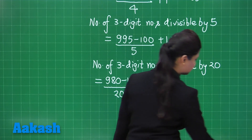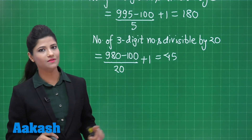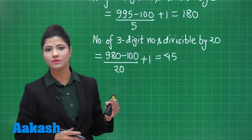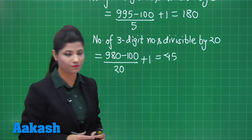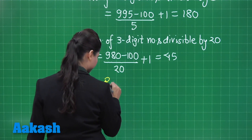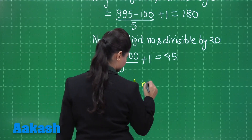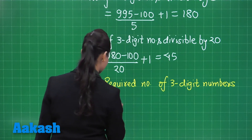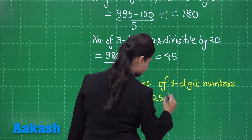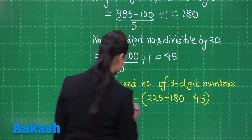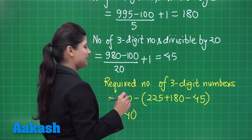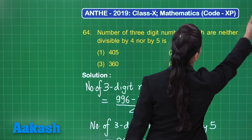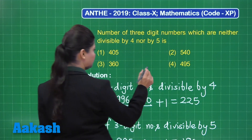For three-digit numbers divisible by both 4 and 5 — that is, divisible by 20 — the largest is 980 and the smallest is 100; dividing by 20 and adding 1 gives 45. So we have 225 + 180 − 45 = 360 three-digit numbers divisible by either 4 or 5.